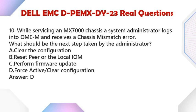Question 10: While servicing an MX7000 chassis, a system administrator logs into OMEM and receives a chassis mismatch error. What should be the next step taken by the administrator? A. Clear the Configuration. B. Reset Peer or the Local IOM. C. Perform Firmware Update. D. Force Active, Clear Configuration. Answer: D.